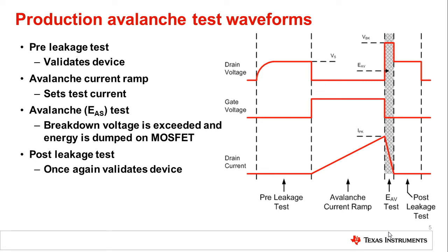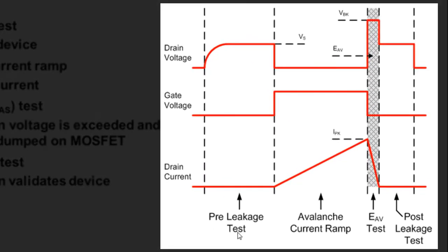There are four stages that comprise the standard UIS test. The first stage is a pre-leakage test where the supply voltage biases the drain of the FET — we're just making sure the FET is behaving as expected and functioning properly. So the FET is turned off, blocking the supply voltage without seeing any extreme leakage current. The second stage is the avalanche current ramp-up, where we turn on the FET so the drain voltage drops and the current through the inductor steadily increases at a constant dI/dt — we're charging up the inductor.